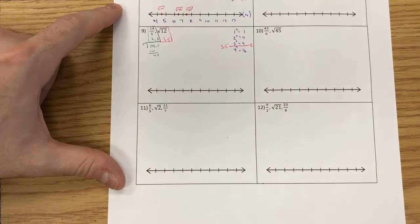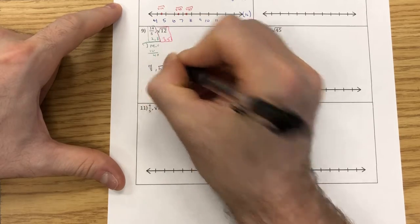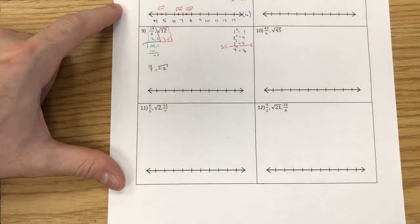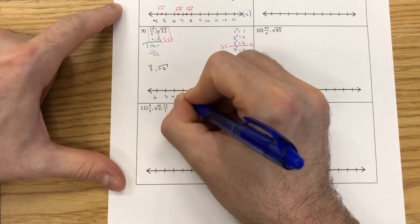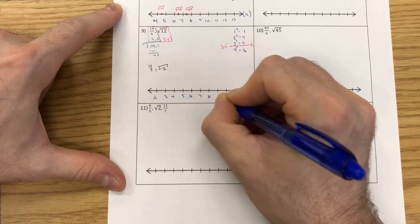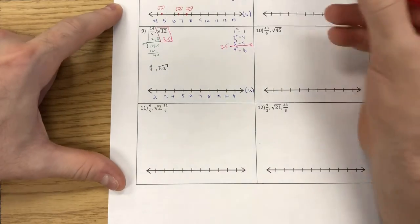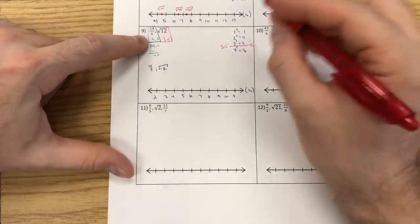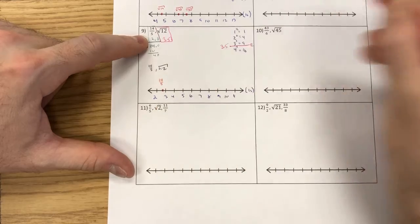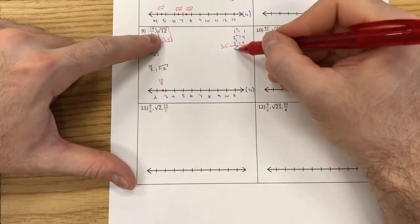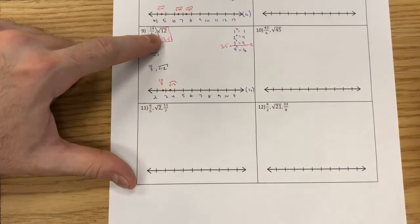These are already listed in order, so I have 14 fifths and the square root of 12. 14 fifths starts at 2.8, so I start just below that. I count by 1s: 2, 3, 4, 5, 6, 7, 8, 9, 10, 11. I plot my points: 2.8 is not on my list, but it's between 2 and 3 — so there's my 14 fifths. Then 12 (the square root) is between 3 and 4 — square root of 12. Done.